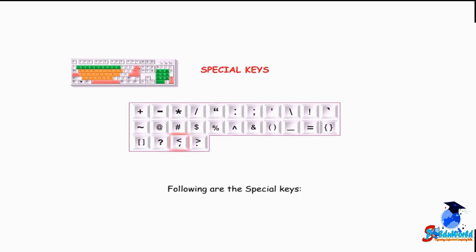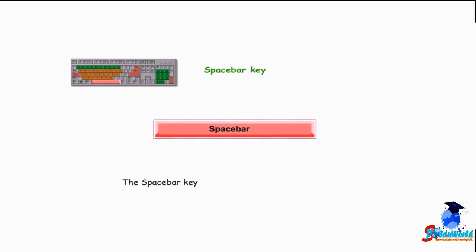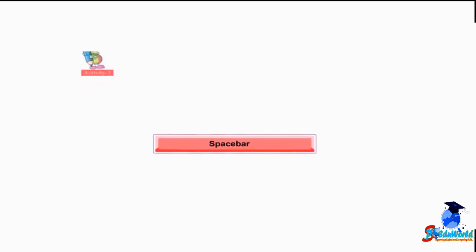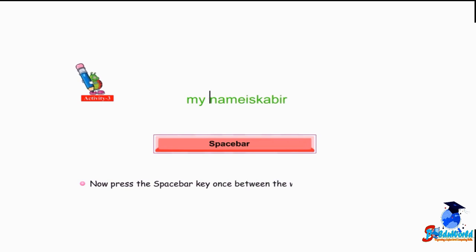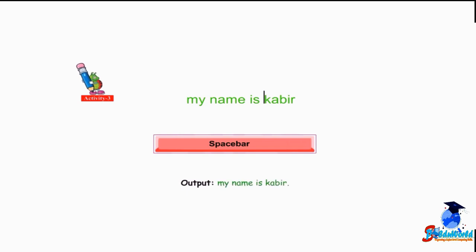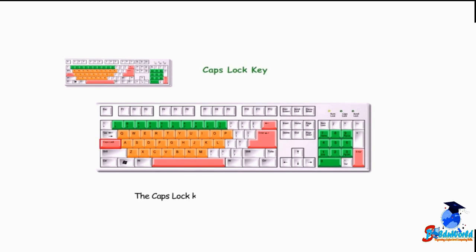There are some more keys on the keyboard known as special keys. Spacebar key — the spacebar key is the longest key on the keyboard. It is used to give spaces between text. For example, to type the sentence 'My name is Kabir', press the spacebar key once between the words to give a space.